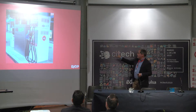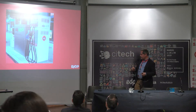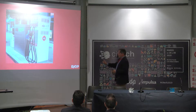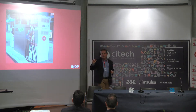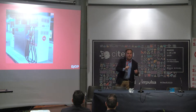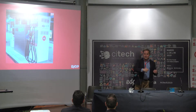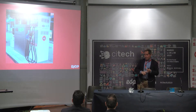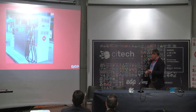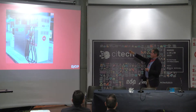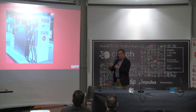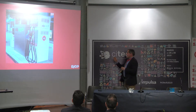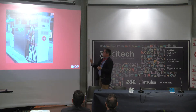El cargador grande que veis es un cargador rápido; el blanco al fondo, un cargador lento. El cargador rápido suministra corriente continua directamente al coche, de manera que carga más rápido porque la batería recibe lo que necesita. Es más grande porque dentro están todos los equipos de electrónica que permiten el paso de corriente alterna a corriente continua, y porque necesita ser refrigerado. Estamos manejando 50 kilovatios, que es la carga rápida estándar en España ahora mismo, una cantidad de potencia relevante que requiere refrigeración.